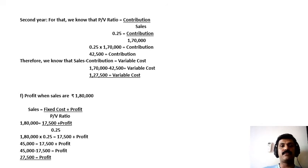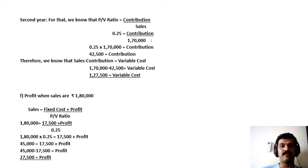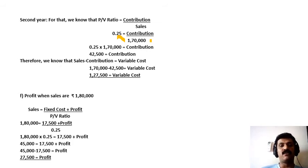Next, we have to calculate the variable cost for the second year using the same formula. PV ratio 0.25 equals contribution divided by second year sales 1,70,000. So 0.25 into 1,70,000 equals contribution, giving us 42,500. Therefore, second year sales 1,70,000 minus second year contribution 42,500 equals variable cost. The variable cost for year two comes to 1,27,500.